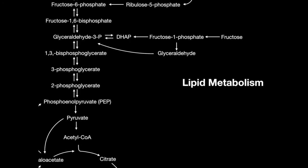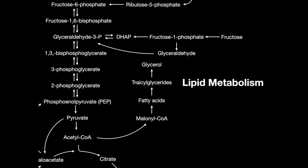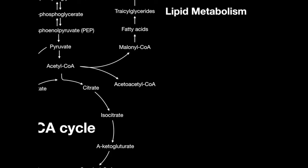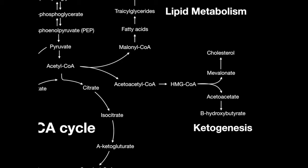Lipids are synthesized in the body from acetyl-CoA. Conversion into malonyl-CoA produces fatty acids which are turned into triacylglycerides. In catabolism, the glycerol backbone can be removed and enter glycolysis at dihydroxyacetone phosphate to produce energy. Acetoacetyl-CoA is produced from forming lipids and can be used for either ketogenesis or cholesterol synthesis.